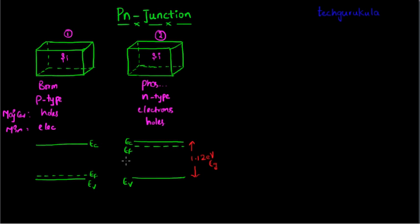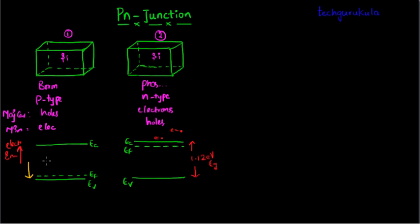One important concept to note: energy increasing upward corresponds to electron energy increasing. So if you have electron 1 and electron 2, electron 2 at a higher position would have more energy than electron 1. Going downward, electron energy decreases. However, for holes, the energy increases in the downward direction — hole energy increases as you move downwards. This is a very important concept to understand in PN junctions.